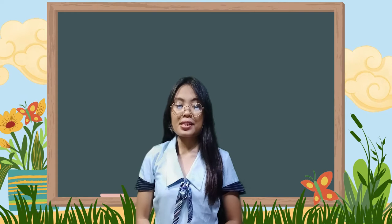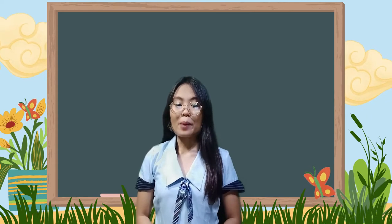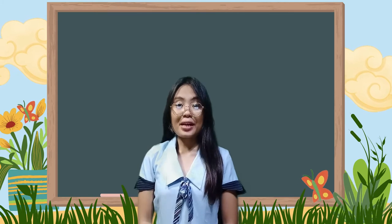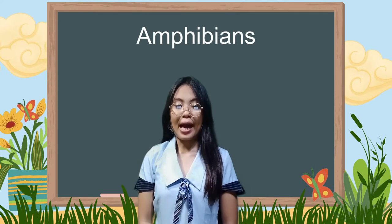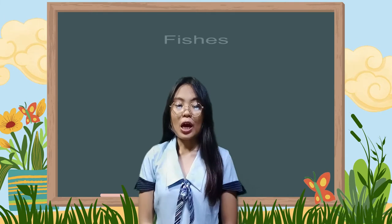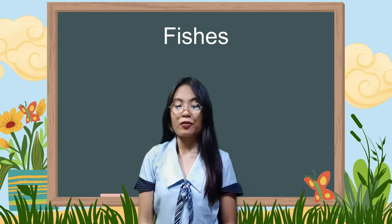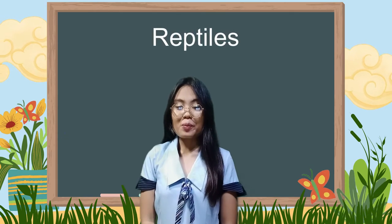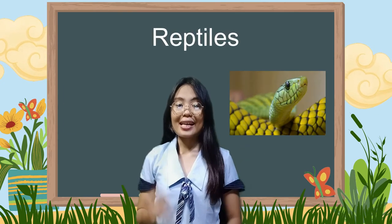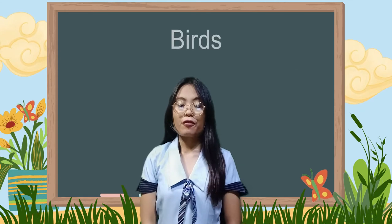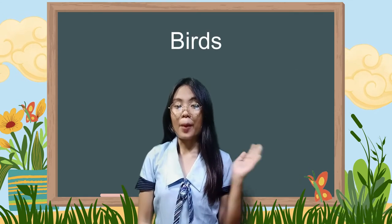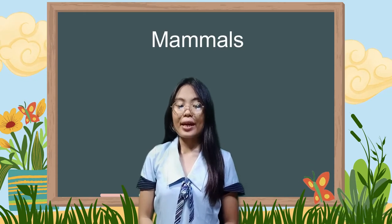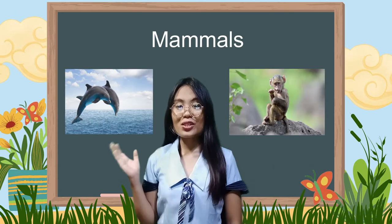The five major groups are: amphibians, fishes, reptiles, birds, and mammals. For examples — for amphibians, we have frogs; for fishes, we have tuna and sharks; for reptiles, we have snakes and alligators; for birds, we have parrots and eagles; and lastly, for mammals, we have monkeys and dolphins.